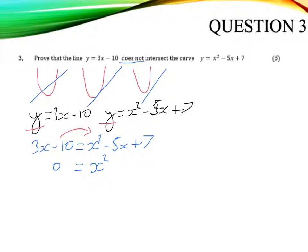x squared. I said I was taking 3x away from both sides, so minus 8x, and I'm adding 10 plus 17. Plus 17. And so I've got a quadratic here, which I'm now going to use the discriminant on.